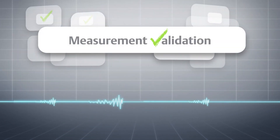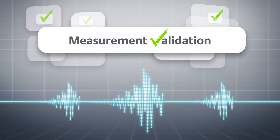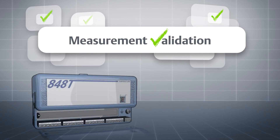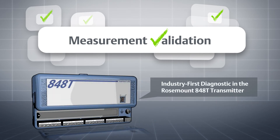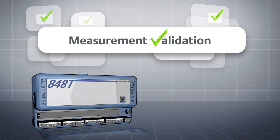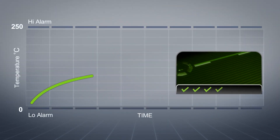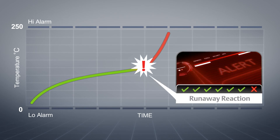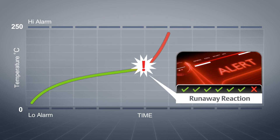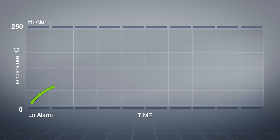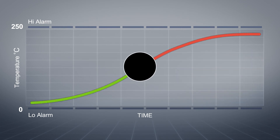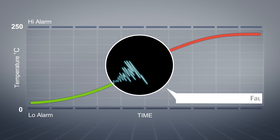Measurement validation is the solution. The first diagnostic of its kind, measurement validation provides online validation of data as it's being measured in real time. When the diagnostic detects abnormal temperature behavior, it alerts the operator so appropriate action can be taken. By analyzing the validity of measurements, you can prevent erroneous readings from unnecessarily shutting down your process.